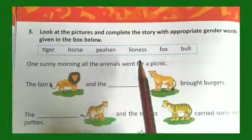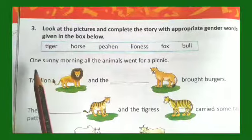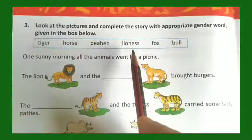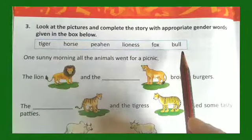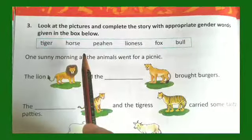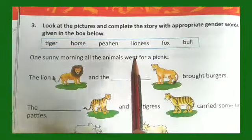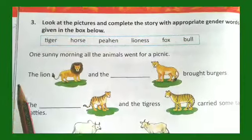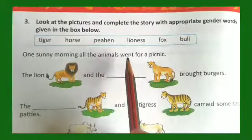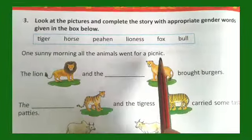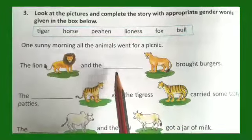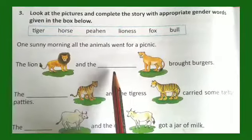The words given are masculine and feminine: tiger, horse, peahen, lioness, fox, bull. We have already done the opposite gender of all these words. One sunny morning all the animals went for a picnic. A lion and the dash brought burgers.